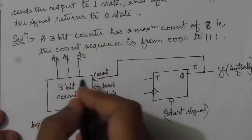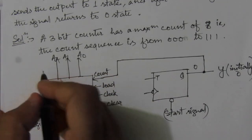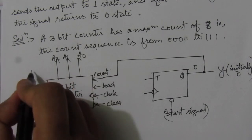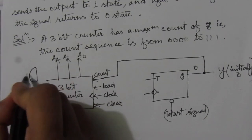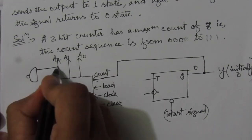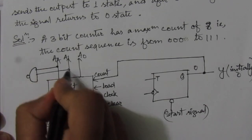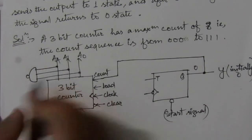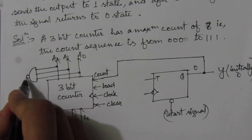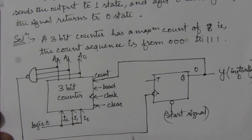Initially we have the counter output at 0, 0, 0. Now here we will use a 3-input NAND gate, whose output will be connected to the clock input of the T flip-flop.